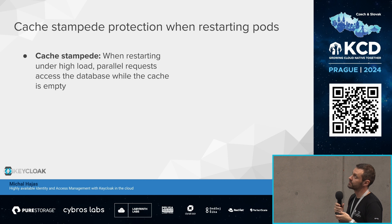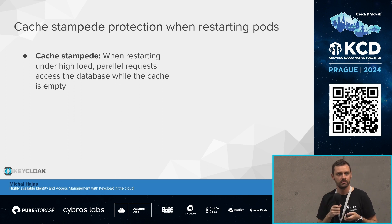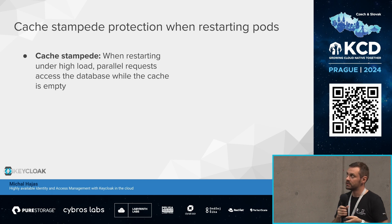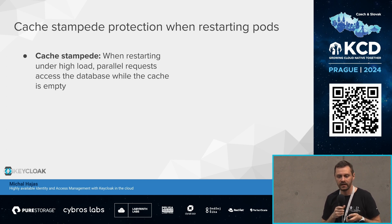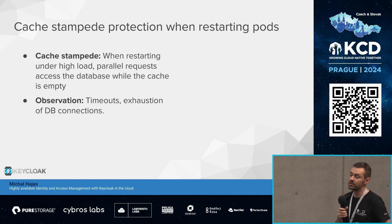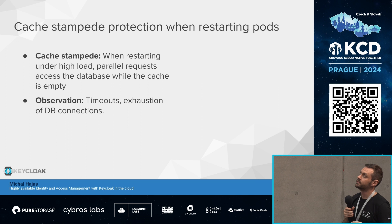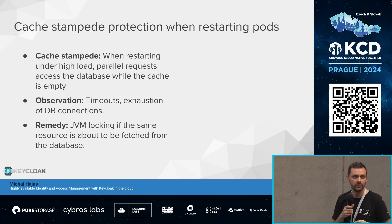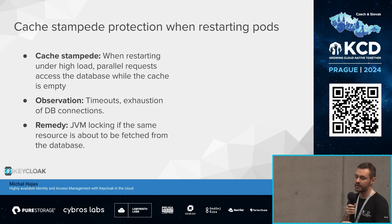Another issue was cache stampede — a term I wasn't familiar with before we encountered it. When you start a new Keycloak node, it has empty caches. We cache database calls to reduce database load. If a new node receives 100 requests in one second and handles 20 concurrently in 20 threads, all threads can miss the cache for the same resource simultaneously. Each checks 'is this entry in cache?' — no — and all go to the database at once. The remedy was to introduce JVM-level locking: if one thread is already fetching an entry from the database, other threads wait for that result rather than also going to the database.